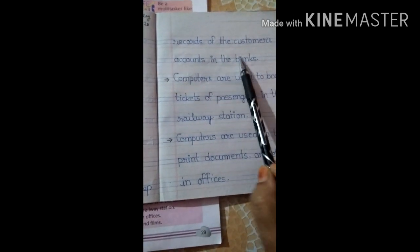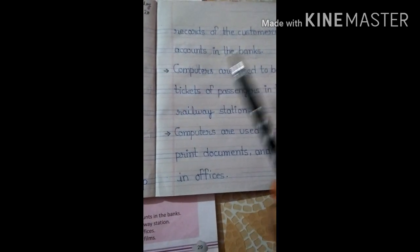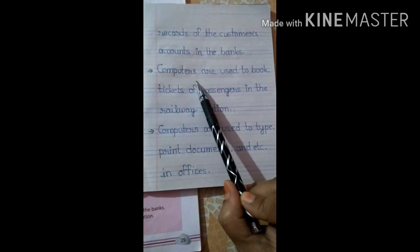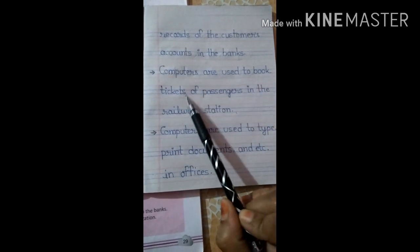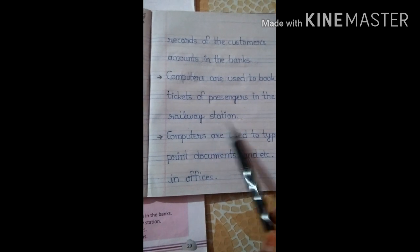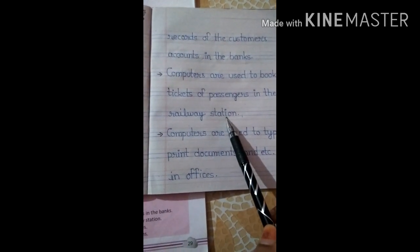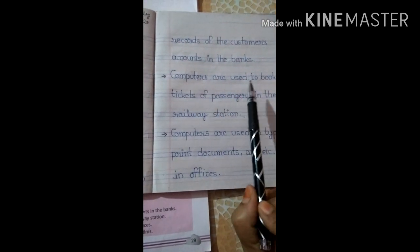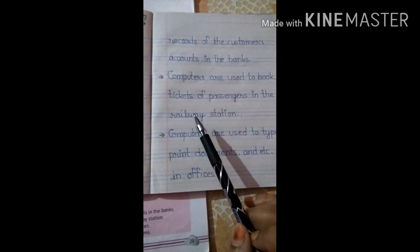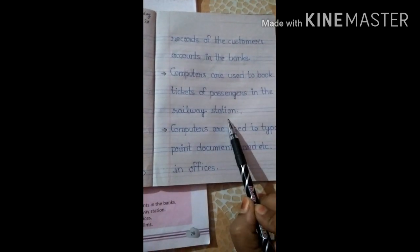Now next point is computers are used to book ticket of the passengers in the railway station. Computer are used to book tickets of the passenger in the railway station.